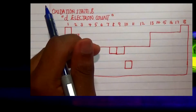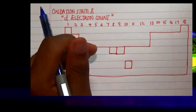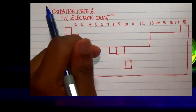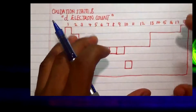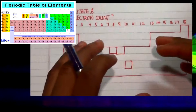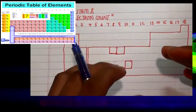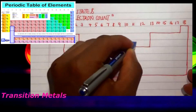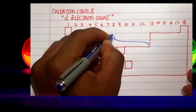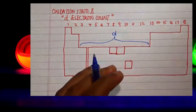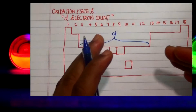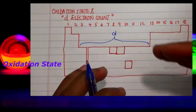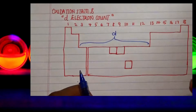In this video we're going to be talking about the relationship between oxidation state and D electron count. Now if you look at this skeletal diagram of the periodic table, we're going to be focusing more on the transition metals which are actually located in the D block. First we need to explain what oxidation state means and also D electron count and see how we can relate them into problems.